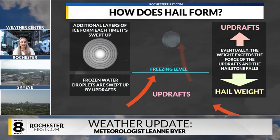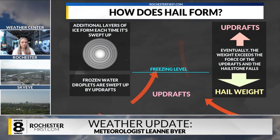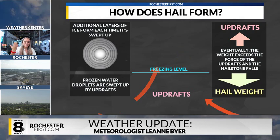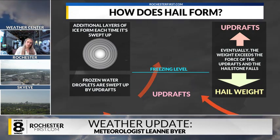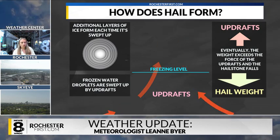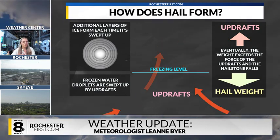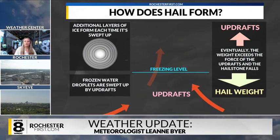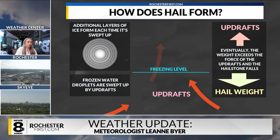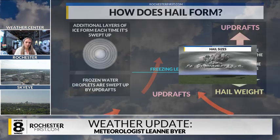So updrafts — and then eventually the weight from the hailstone actually exceeds the force of the updraft, and that's when they start to fall. Thunderstorms that have stronger updrafts allow for these hailstones to continue to keep on growing, but those that don't have the strongest updrafts may result in really tiny-sized hail.